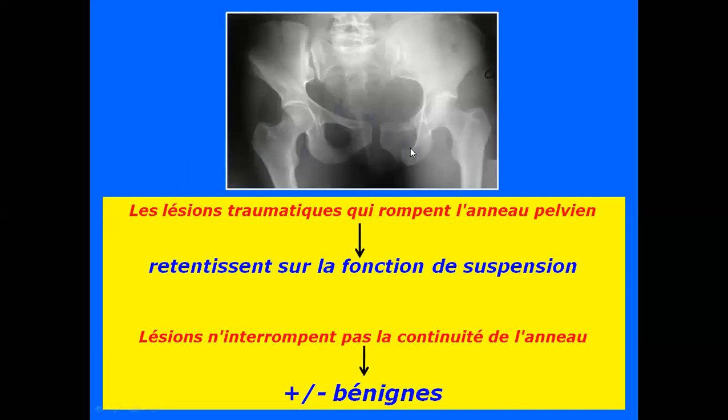Concernant les traumatismes du bassin, il y a deux grandes familles. Les lésions qui vont rompre l'anneau pelvien, c'est-à-dire l'ouvrir soit en avant soit en arrière, avec un retentissement sur la fonction de suspension — la station debout et la marche. Et d'autres lésions qui ne vont pas interrompre la continuité de l'anneau, des fractures partielles, moins graves et plus ou moins bénignes par rapport aux premières.